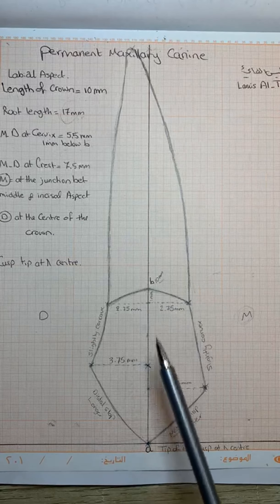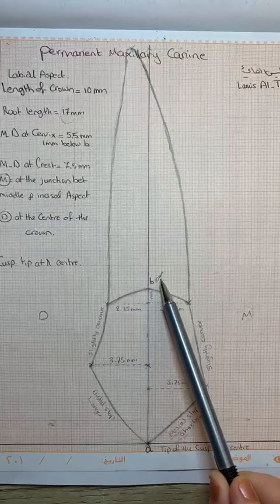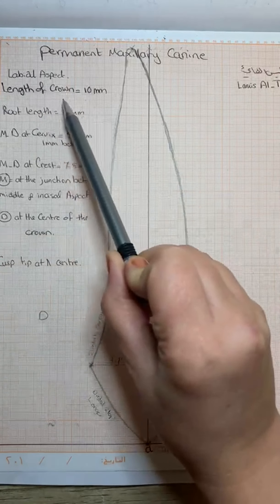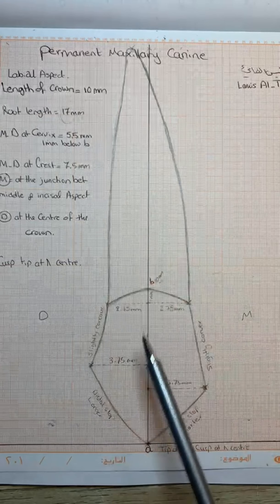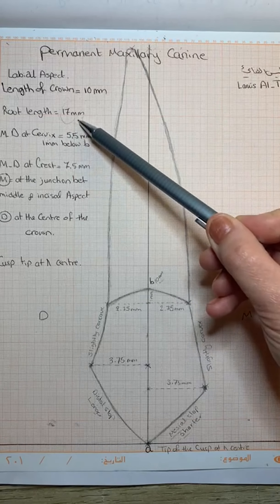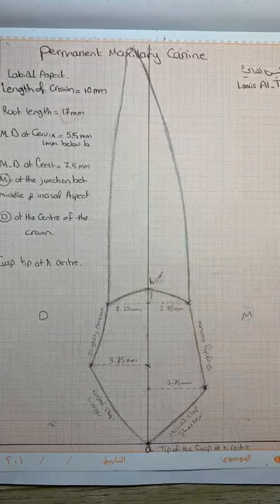From A to B, it is 10 mm, which represents the crown length, while from B to C, it's 17 mm, which represents the root length.